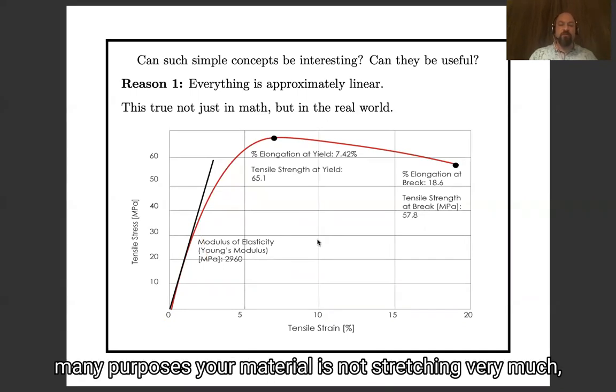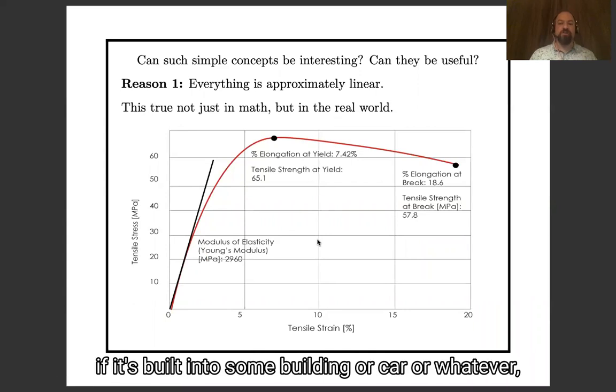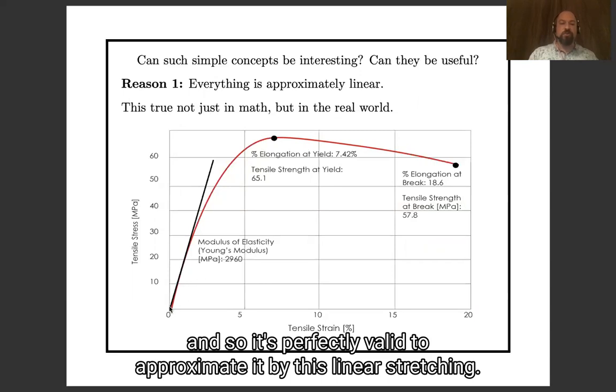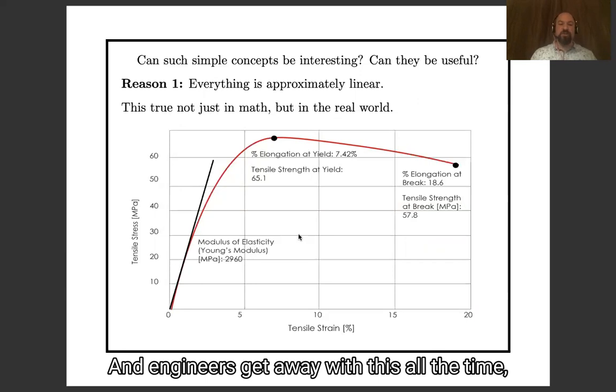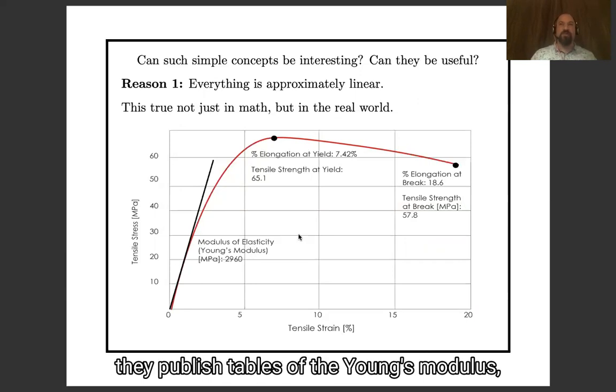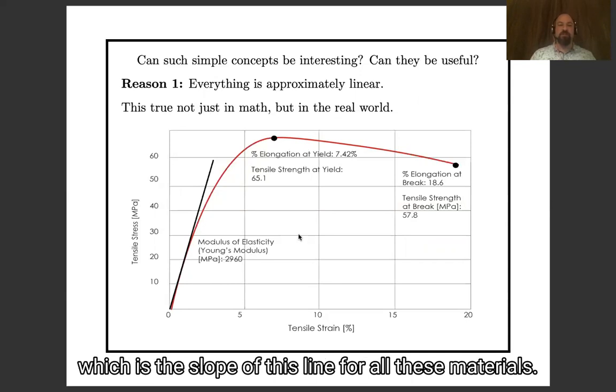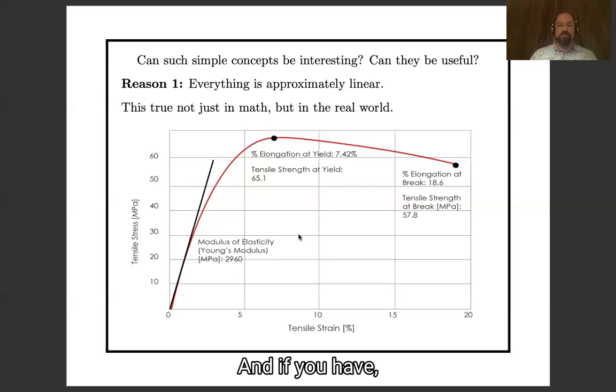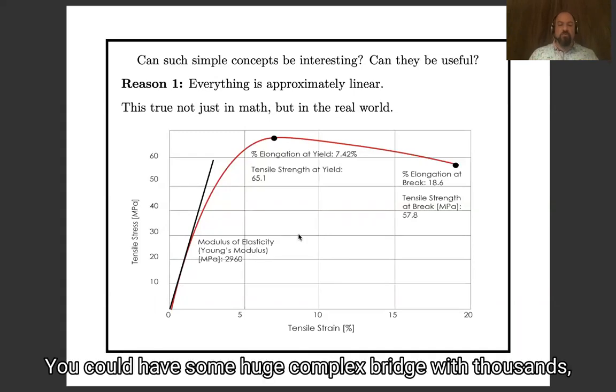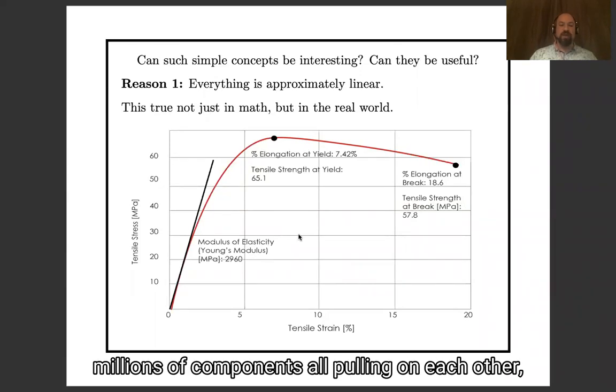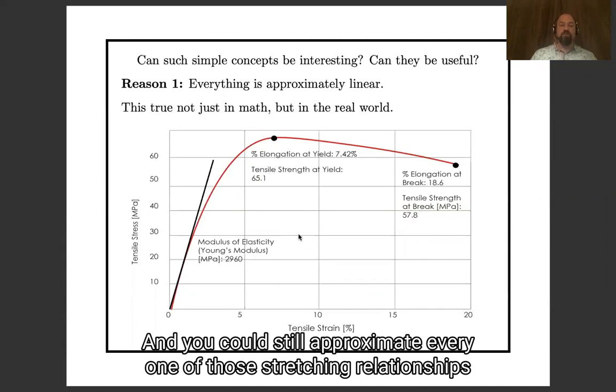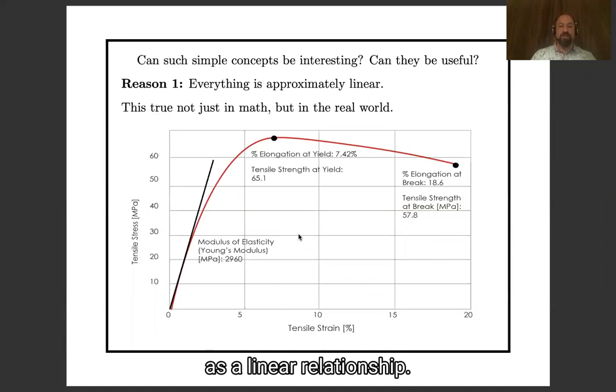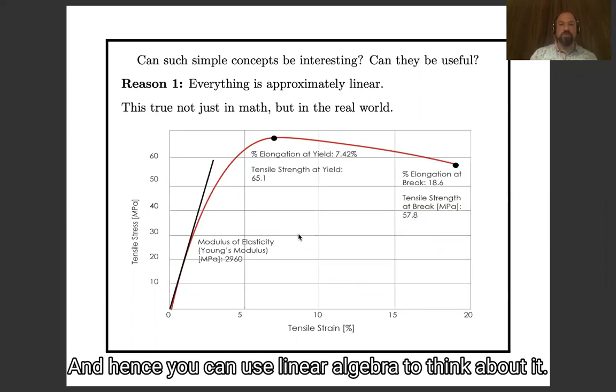And for many, many purposes, your material is not stretching very much, if it's built into some building or car or whatever. And so it's perfectly valid to approximate it by this linear stretching. And engineers get away with this all the time. They publish tables of the Young's modulus, which is the slope of this line for all these materials. And if you have some huge complex bridge with thousands, tens of thousands, millions of components all pulling on each other, you could still approximate every one of those stretching relationships as a linear relationship. And hence, you can use linear algebra to think about it.